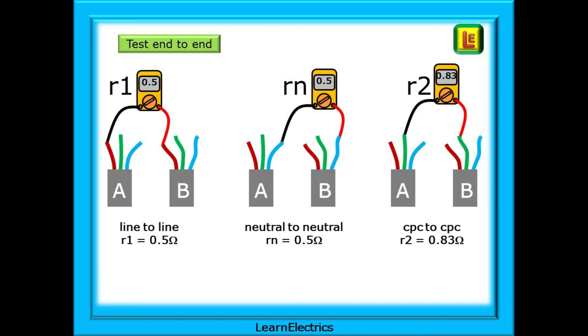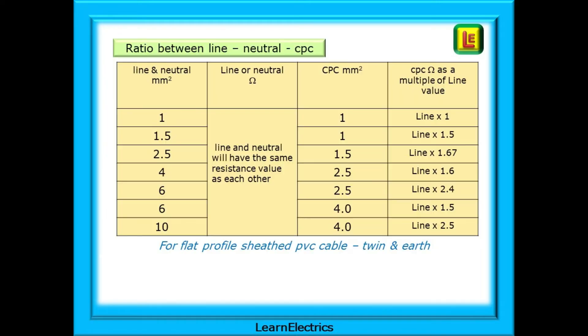This table shows how we get the ratios of line to CPC resistances for different size twin and earth cable. Find the twin and earth that you are testing, and the rightmost column gives the multiplication factor to use. Whatever the line reading is, multiply it by this factor to find the expected CPC value.